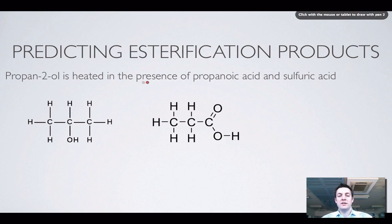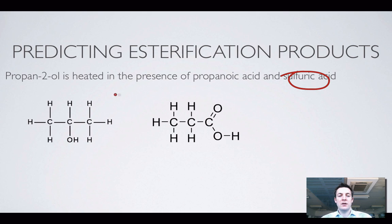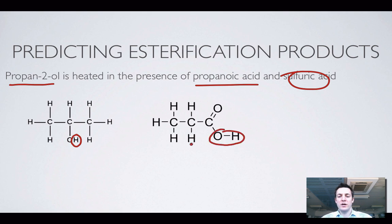Let's look at another example. This time propan-2-ol is heated in the presence of propanoic acid and sulfuric acid. Again, the sulfuric acid is just a catalyst. The reaction is between the propan-2-ol and the propanoic acid. You might be thinking — it's a secondary alcohol, will it react differently? Not really; we're still going to lose the H from the alcohol and the OH from the acid.